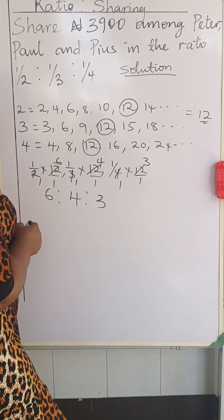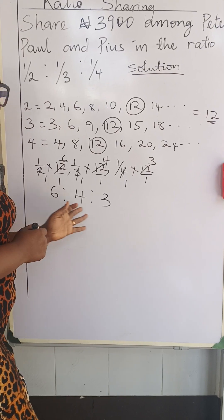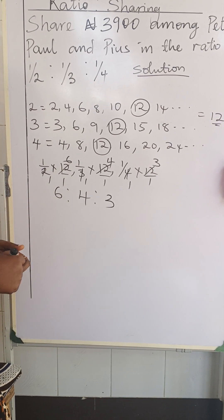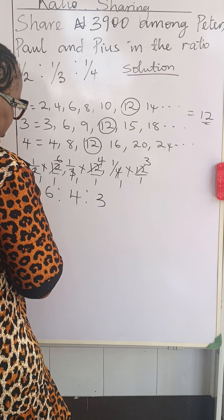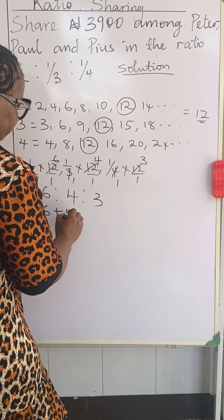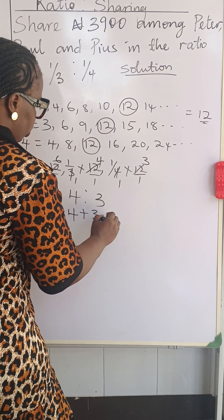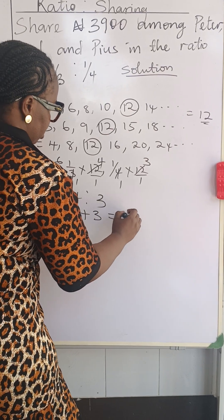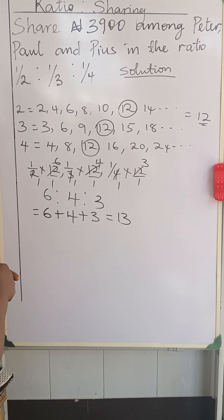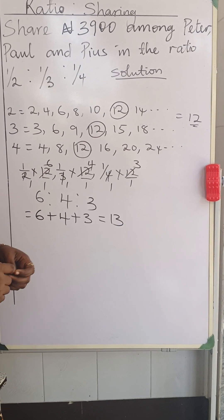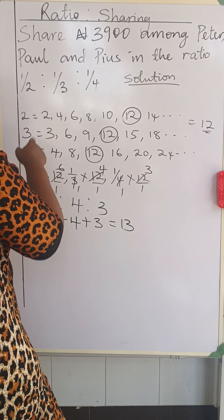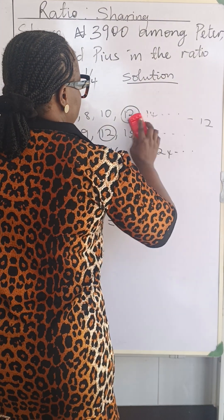Now the parts are six, four, and three. To move on, we add these parts together: six plus four plus three equals thirteen. We have thirteen parts altogether, and the money being shared is three thousand nine hundred naira.